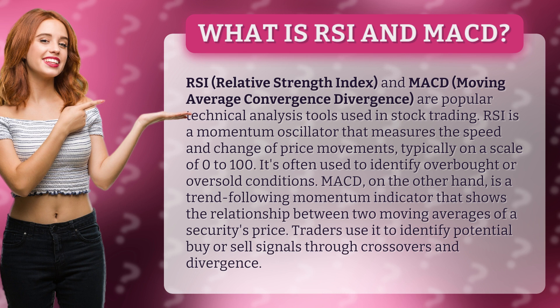RSI is often used to identify overbought or oversold conditions. MACD, on the other hand, is a trend-following momentum indicator that shows the relationship between two moving averages of a security's price. Traders use it to identify potential buy or sell signals through crossovers and divergence.